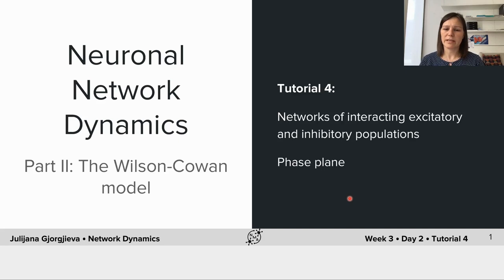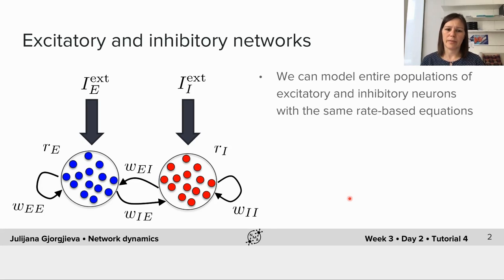Today we're going to define the concept of phase planes, following similar terminology to the first tutorial. We begin by representing these networks in a schematic way, just like what we saw for a single population of neurons. Here we represent the population of excitatory neurons denoted by the blue circles with RE, and we denote the activity of the inhibitory neurons in red circles by RI.